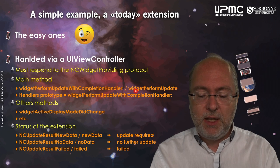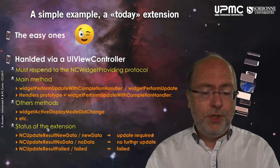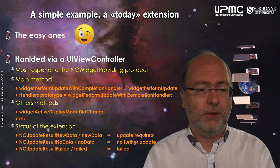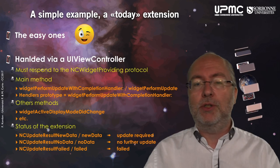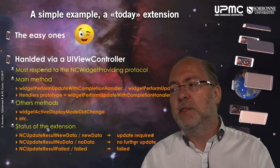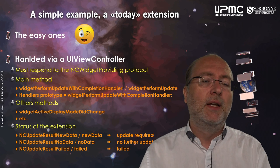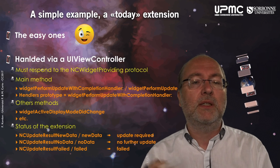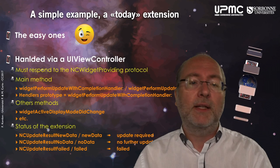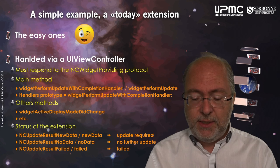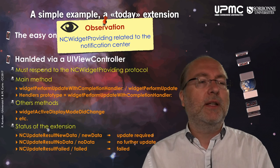You have both the Objective-C name and the Swift name for the protocol method, and it allows you to call a handler whose prototype is defined there — we'll see an example later. You also have a method to check if the display must change, for example because the terminal changed orientation. Additionally, you can provide information about the status of the extension: you can say there is new data so an update will be required later, no data so never update, or that it failed — for instance because you couldn't access the internet. NCWidgetProviding is related to the notification center.